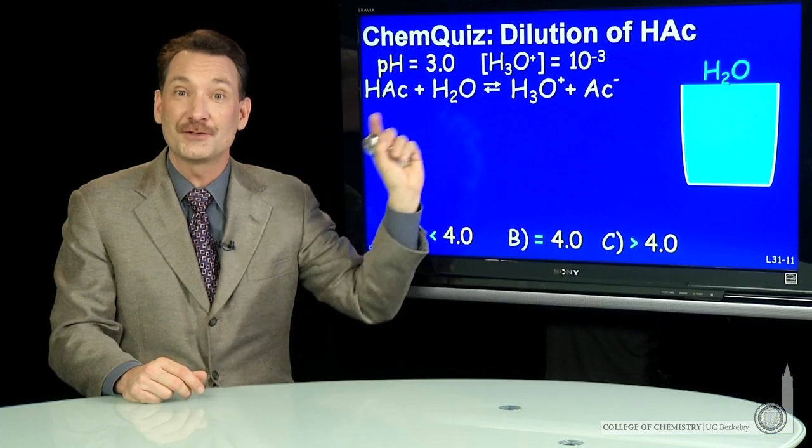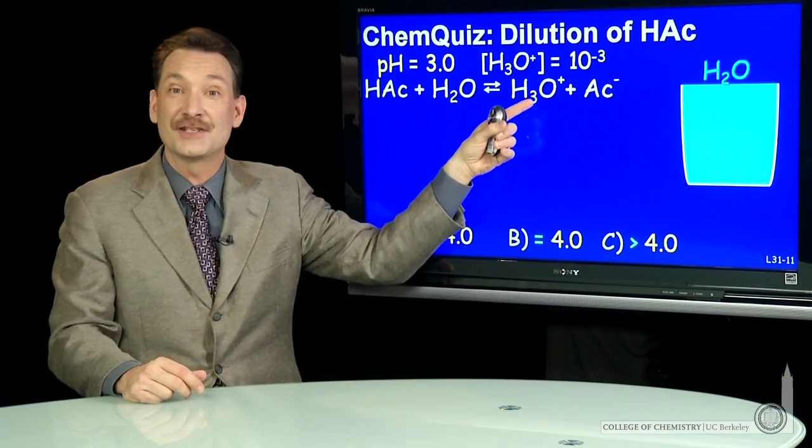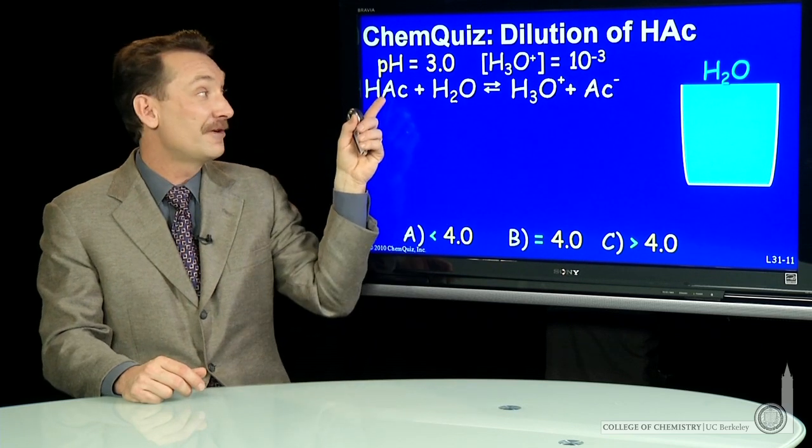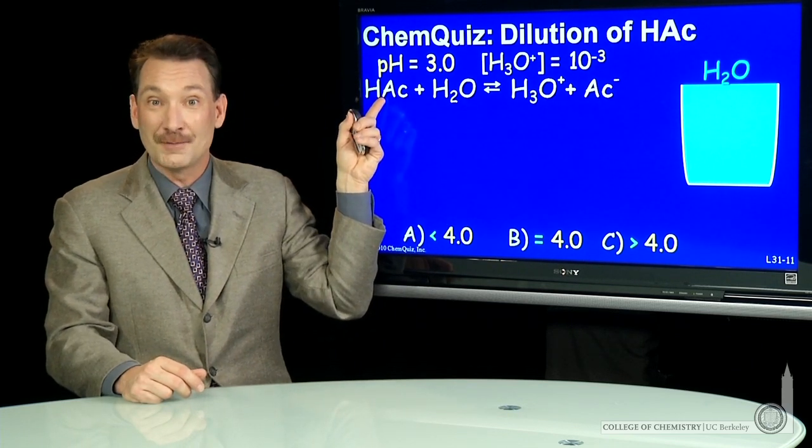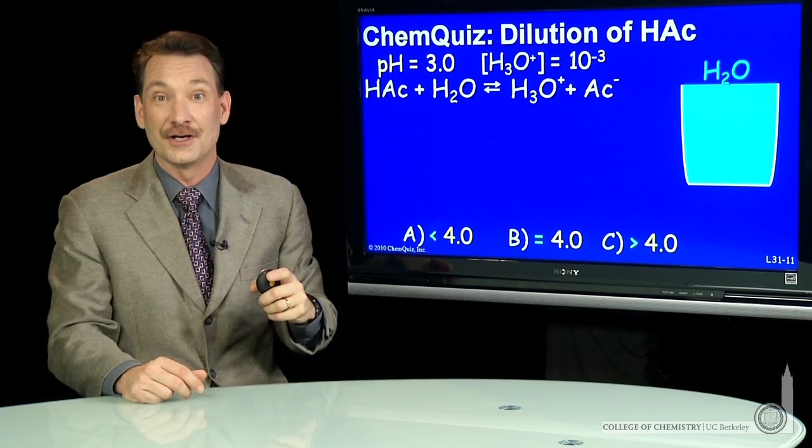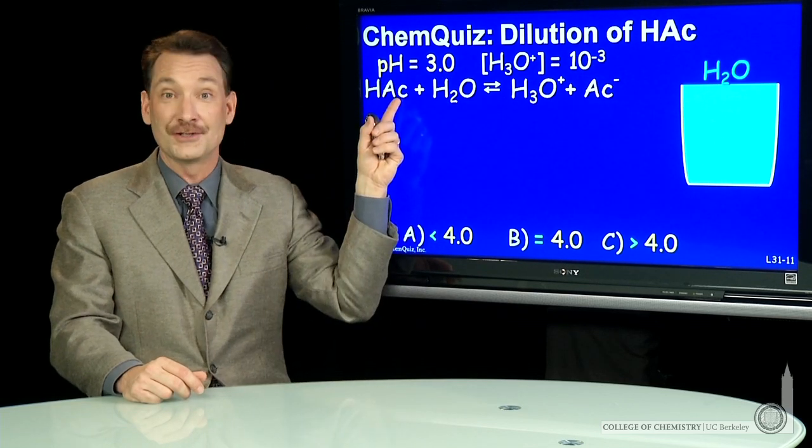Now we know K for this reaction is small, so to get 10^-3 here, we have to have much more than 10^-3 HAC concentration. This reaction favors the reactants.